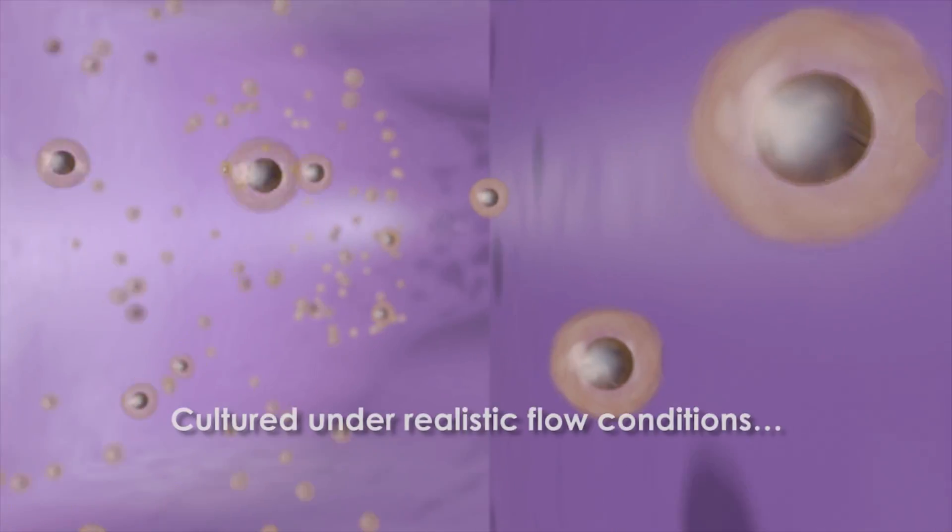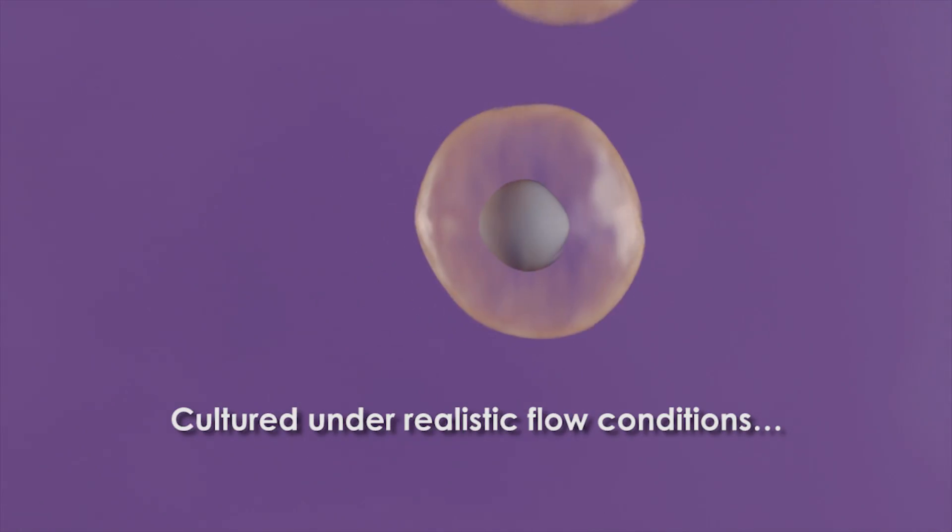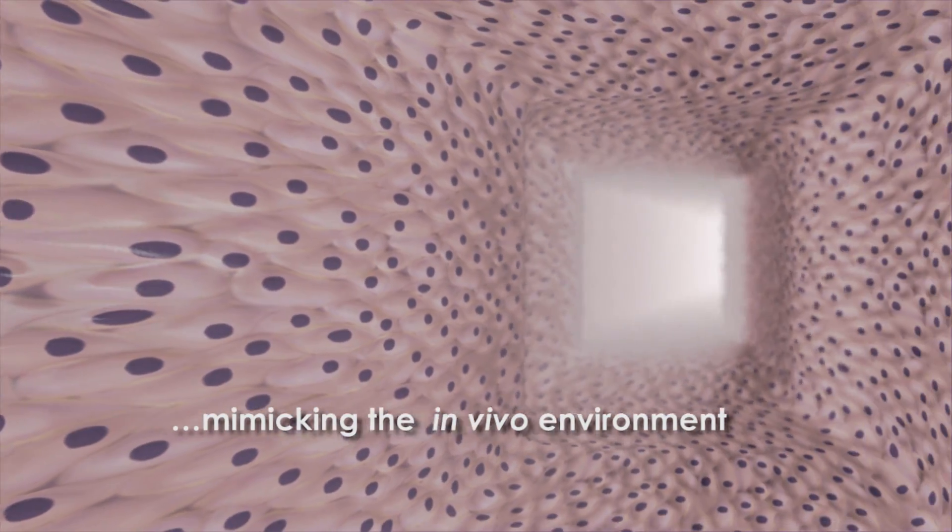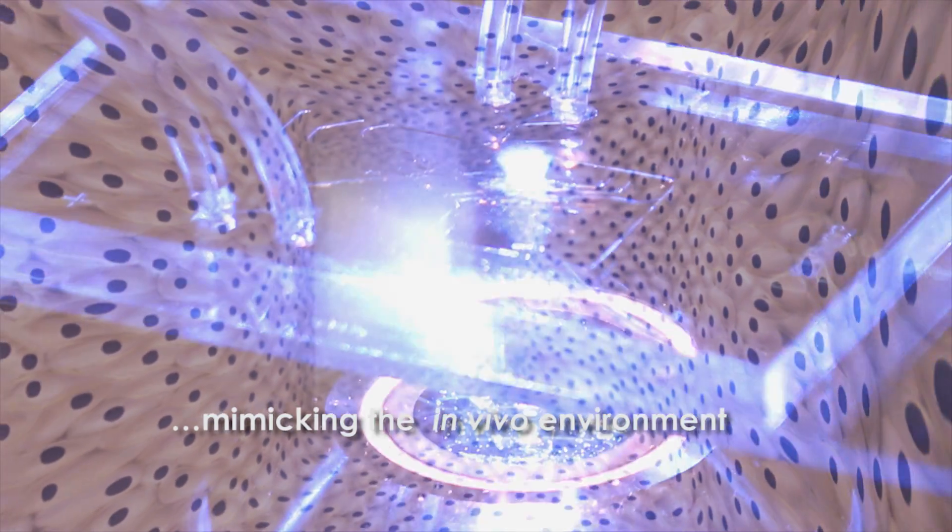The cells attach to the channel walls and are cultured under realistic flow conditions. This results in a confluent layer of cells grown under continuous physiological flow and shear conditions, with morphology and phenotype mimicking the in vivo environment.